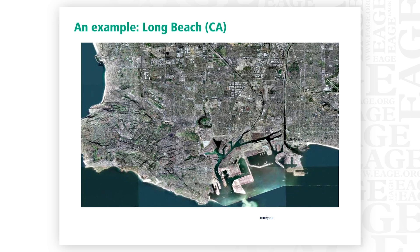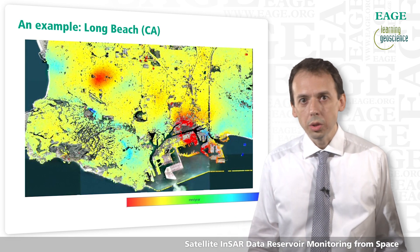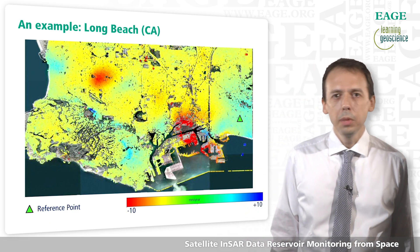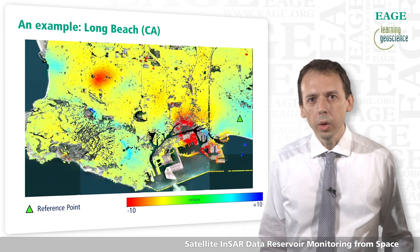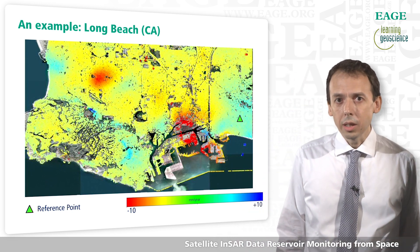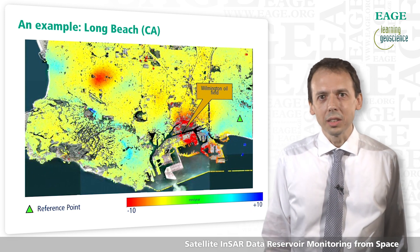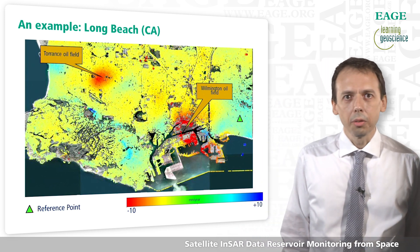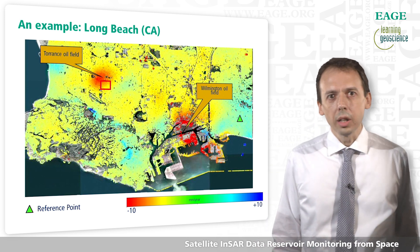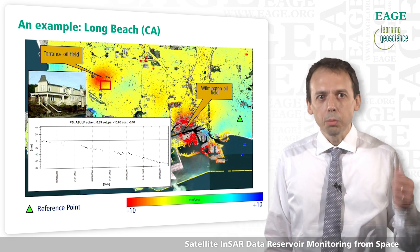Here is an optical image of Long Beach, California, with the family of coherent scattering centers superimposed — measurement points used to estimate displacement phenomena. The color bar is between minus 10 and plus 10 mm per year. Red means movement away from the radar sensor and blue means movement towards the sensor. Since the incidence angle in this case is just 23 degrees, we are very sensitive to any vertical displacement. We can find the footprint of the subsidence of the Wilmington oil field in Long Beach and the Torrance oil field. For each point, we can extract a time series of displacement — measuring a displacement of a few millimeters from 800 km in space.